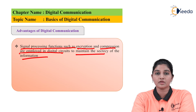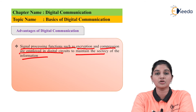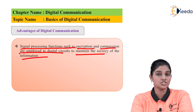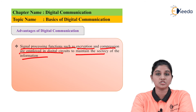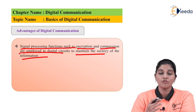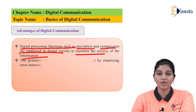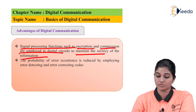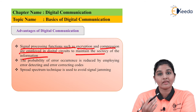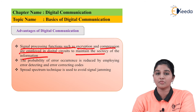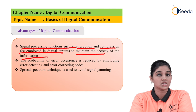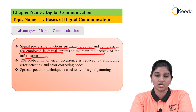Encryption and decryption are processes used for providing security to the information to be transmitted, and they can be easily done in case of digital signals. Therefore, a high percentage of security is achieved in digital communication compared to analog. Further, the probability of error occurrence in digital communication is less than in analog. Error detection and error correction also become very easy in digital communication, with various error detection and correction techniques available.